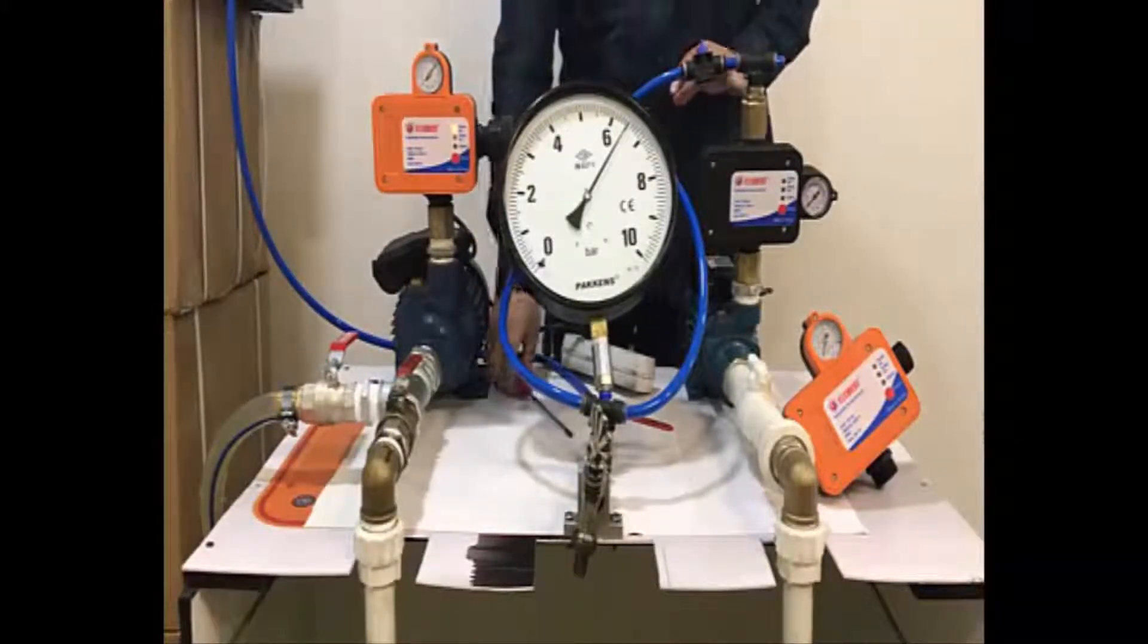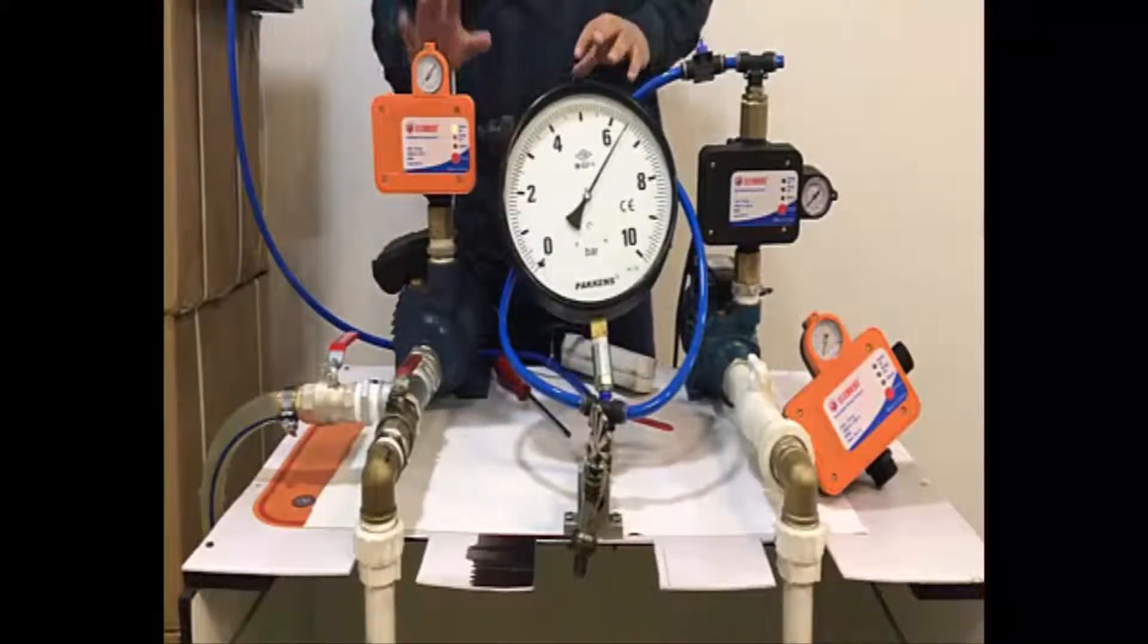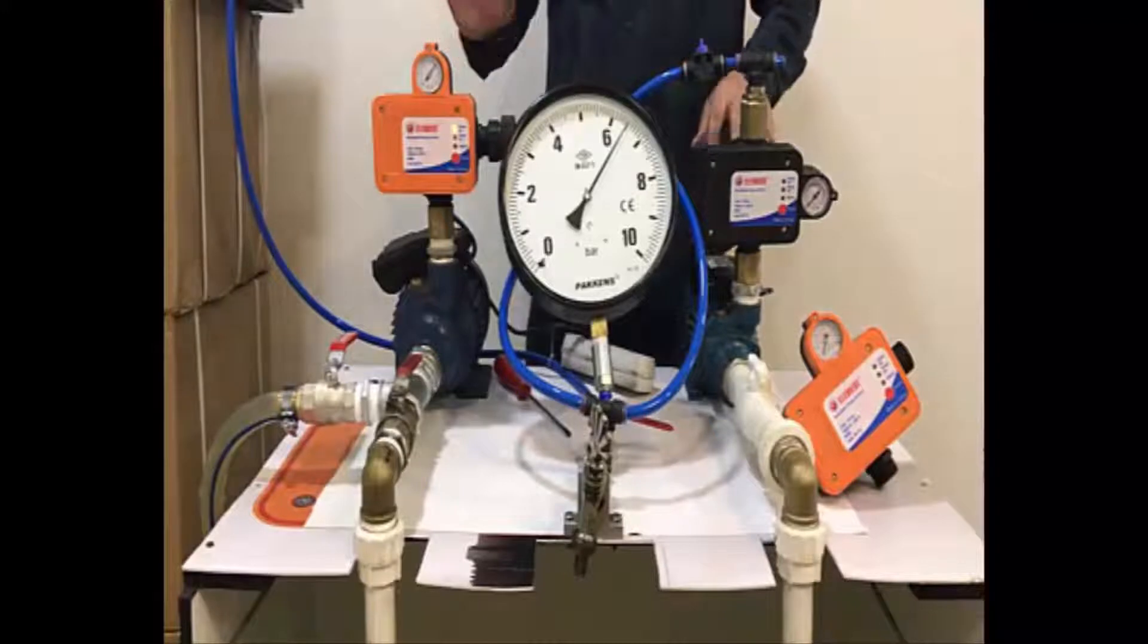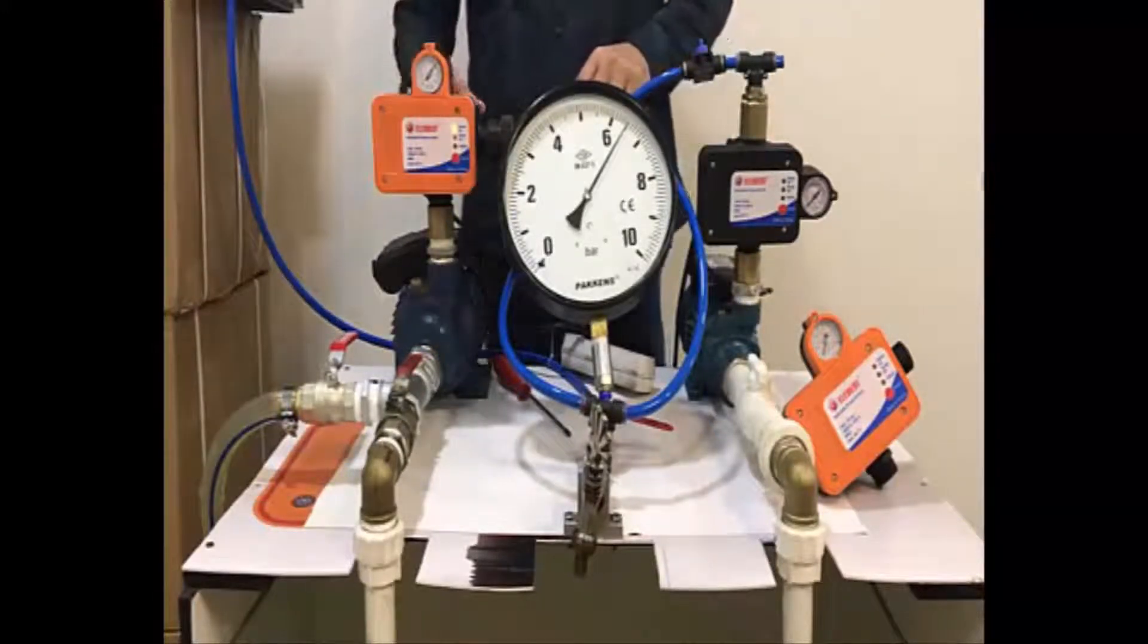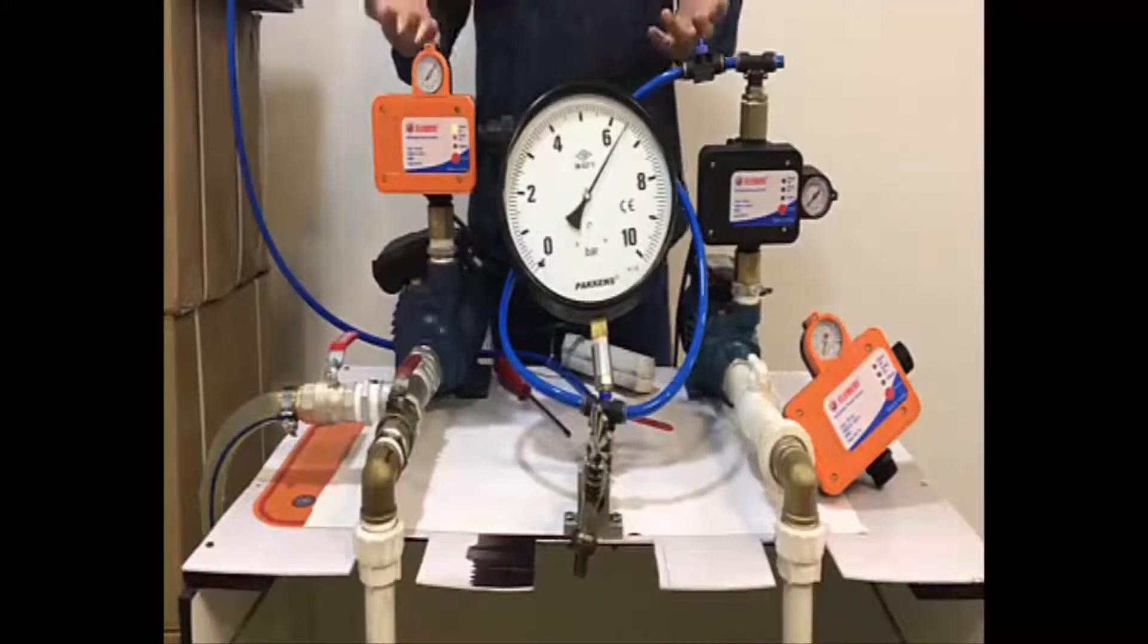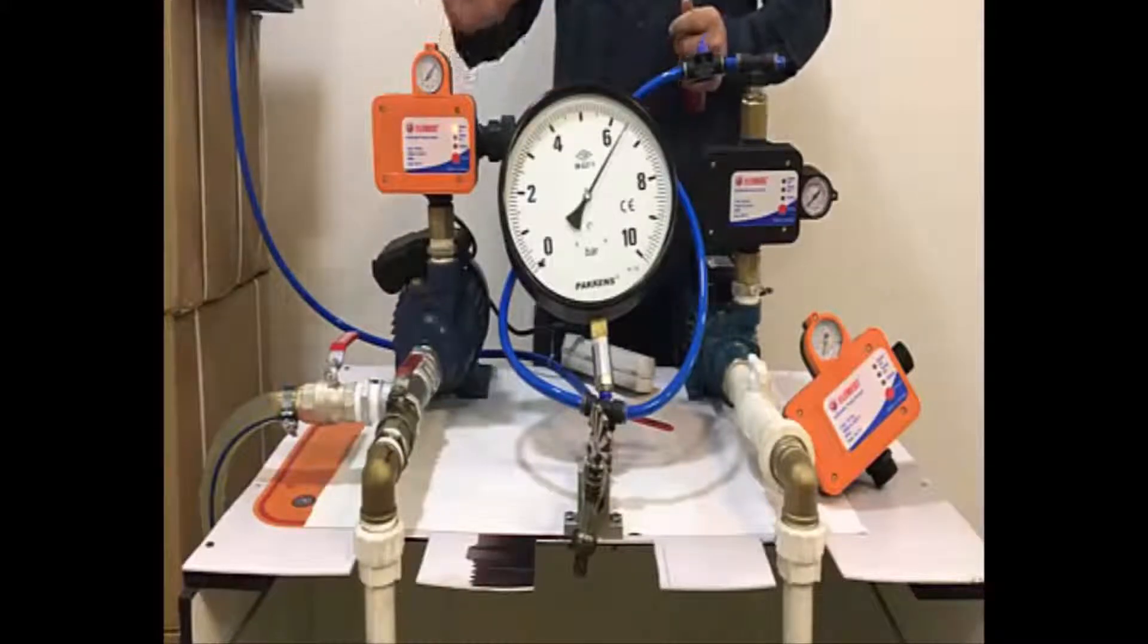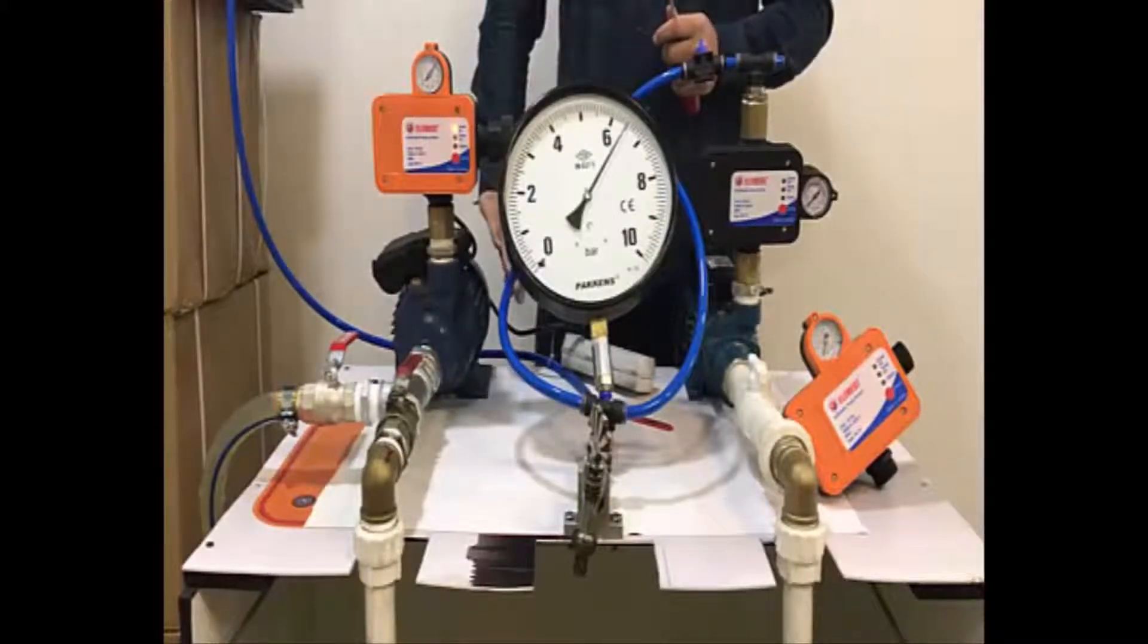This is all I can say about daily use of our device. Another important specification of our device is, for example, sometimes the city water is cut off or there's no water in the system. So it automatically stops and prevents the pump engine from being damaged.